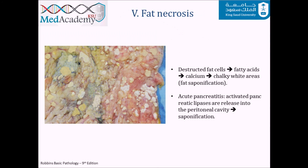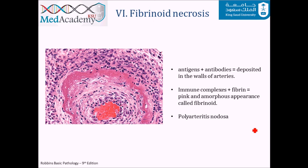Fat necrosis occurs when fat cells are destroyed, releasing fatty acids that combine with calcium to produce grossly visible chalky white areas — a process called saponification. Under microscopy, you see foci of necrosis containing shadowy outlines of necrotic fat cells with basophilic calcium deposits. A classic example is acute pancreatitis: the pancreas lies in the abdominal cavity surrounded by mesenteric fat, and pancreatic lipases released into the peritoneal cavity degrade this fat, resulting in saponification.